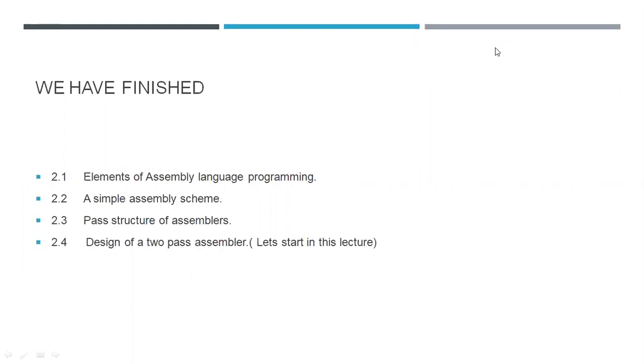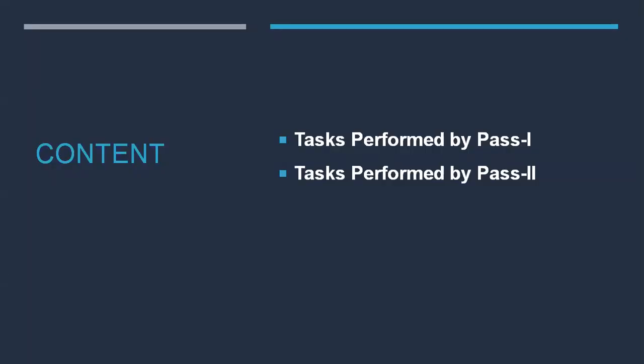The content for this lecture covers tasks performed by Pass 1 and tasks performed by Pass 2. The rough idea we already have is that Pass 1 performs analysis and generates intermediate representation (IR). From the pass structure of assemblers, we know Pass 2 performs synthesis of the code — that is, the IR generated by Pass 1 along with different data structures — and at last Pass 2 generates the target program.